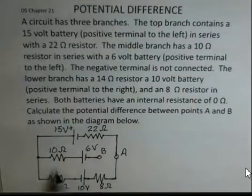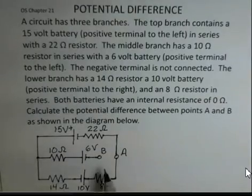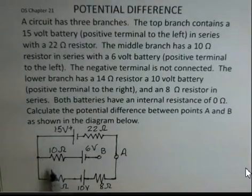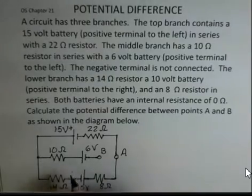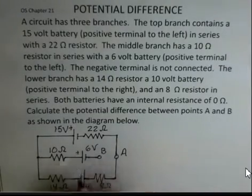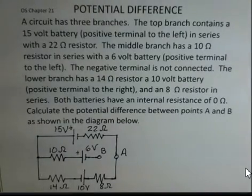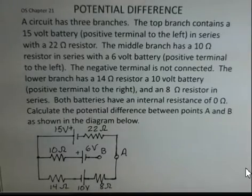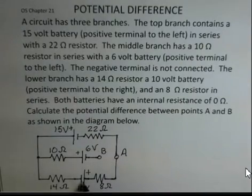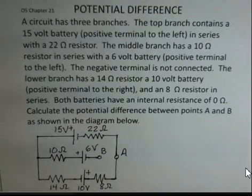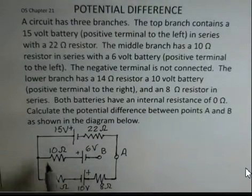The middle spur of the circuit has a 10-ohm resistor and a 6-volt battery. The long line represents the positive pole of that battery. Then there's terminal B, followed by 14 ohms. The bottom branch has a 10-volt battery — the positive terminal is off to the right — and then an 8-ohm resistor.